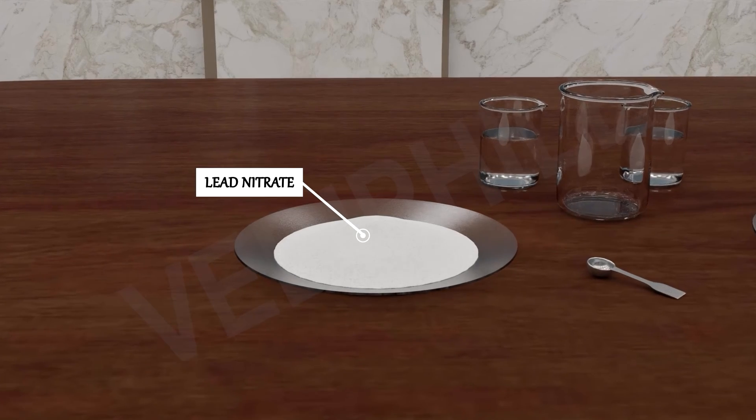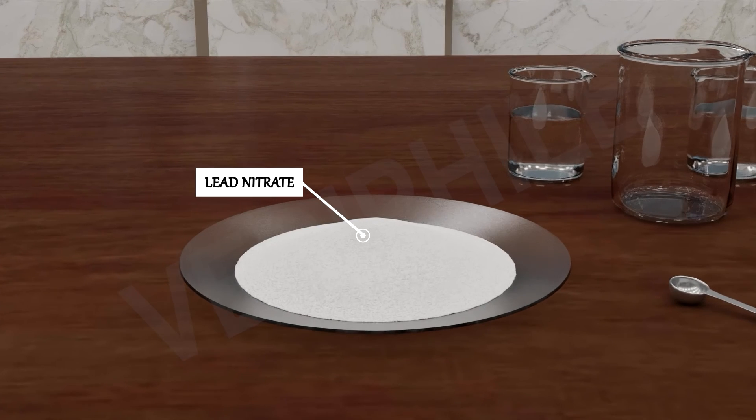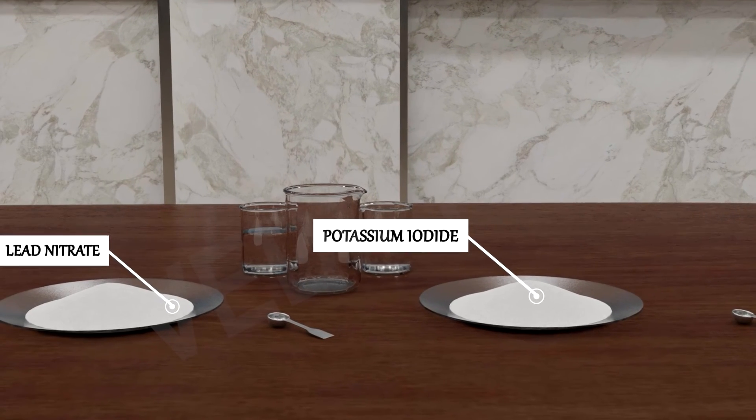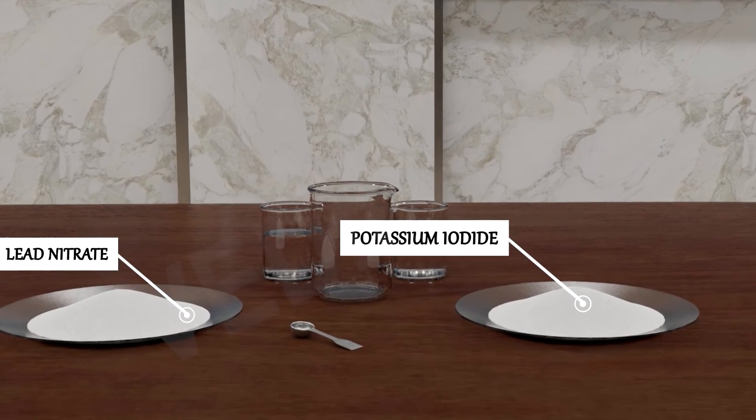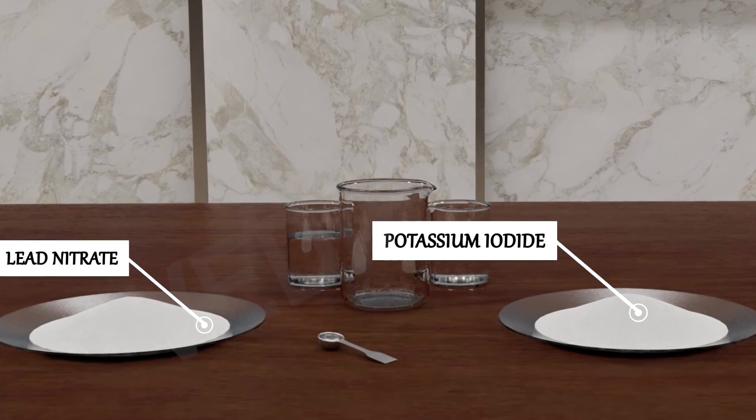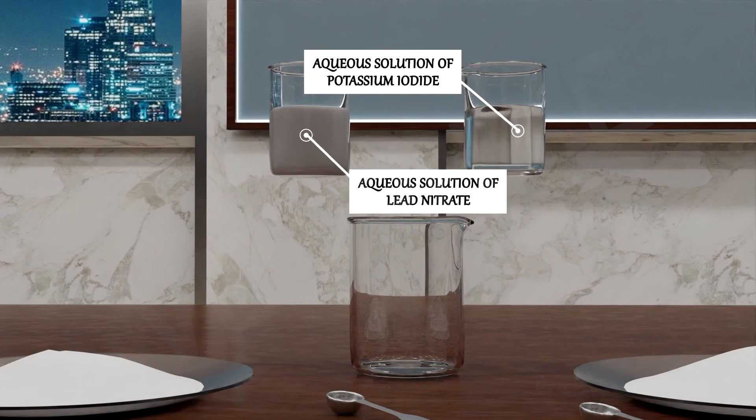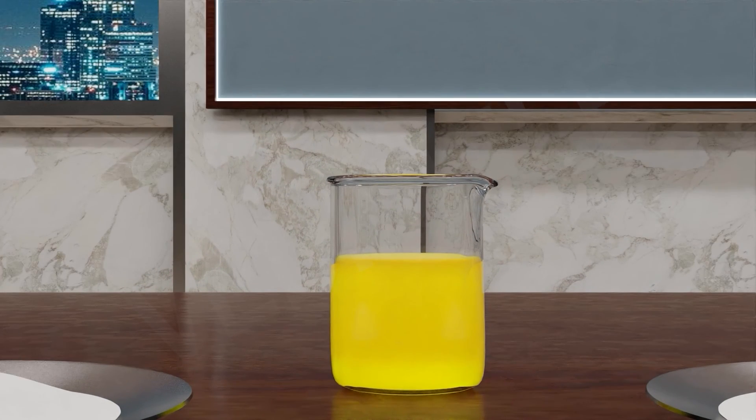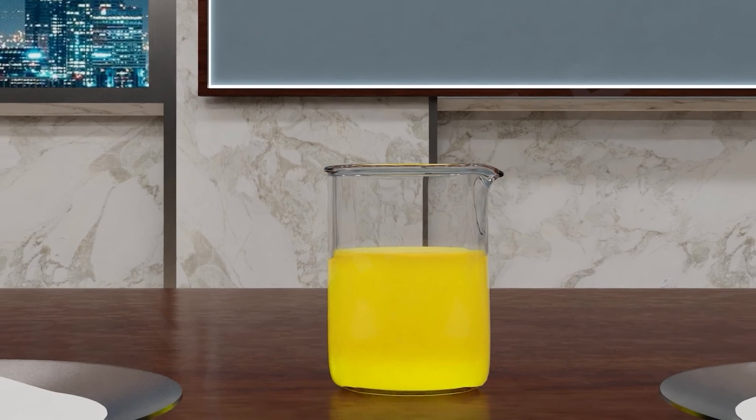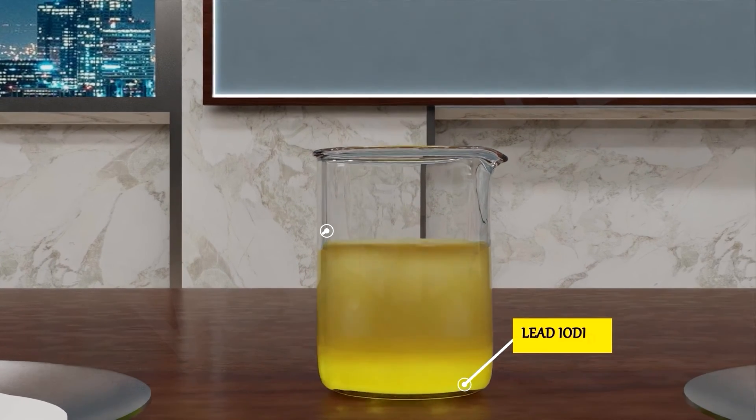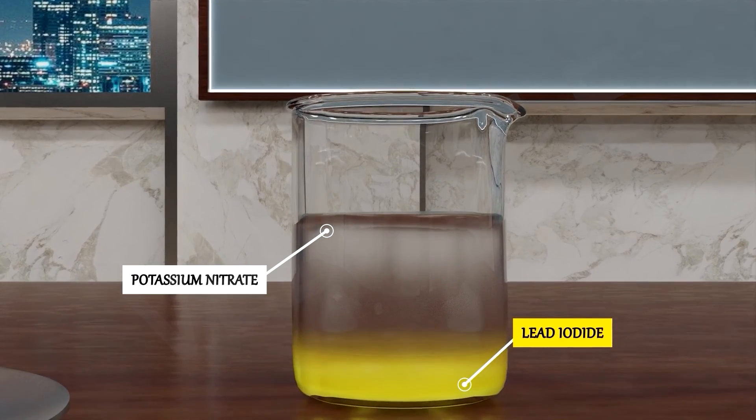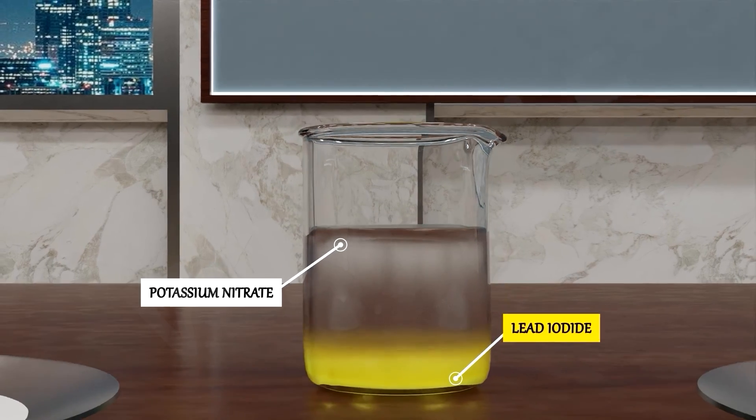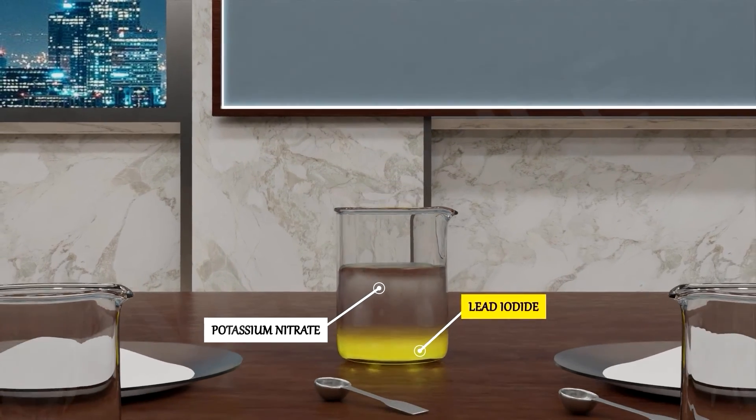So in this activity, we saw that lead nitrate and potassium iodide were both colorless. They reacted with each other to form a yellow precipitate of lead iodide. Lead iodide settles down at the bottom of the tube.